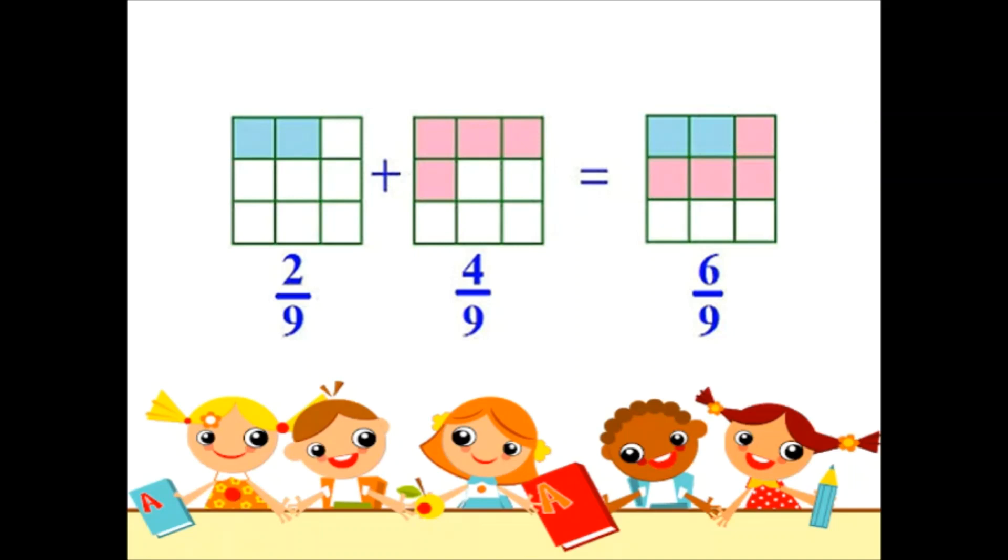And when we combine the blue and the pink part, we get 6 boxes shaded out of 9, and hence the fraction 6 by 9. So what are we doing here? We are adding the numerators, 4 and 2, which is 6, and writing the denominator as it is, which is 9.